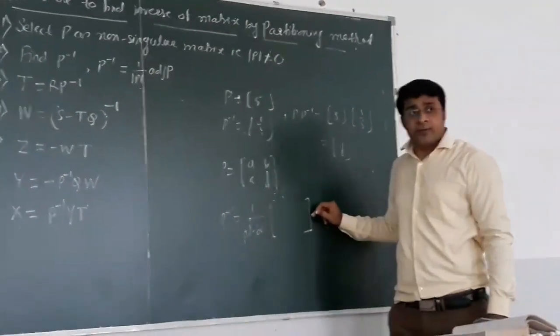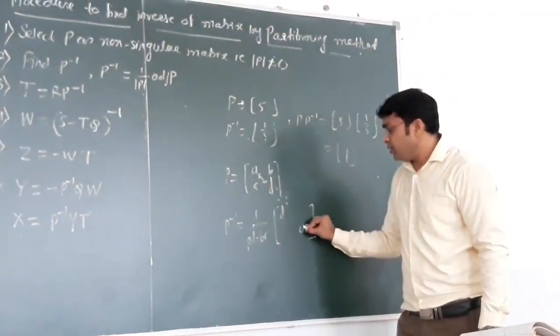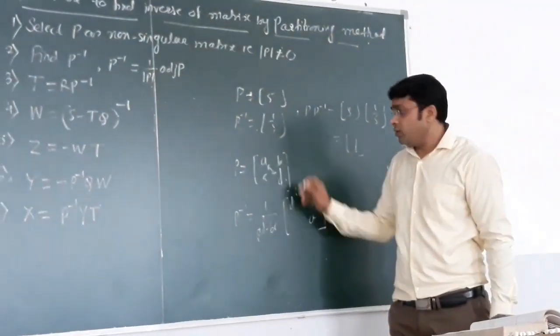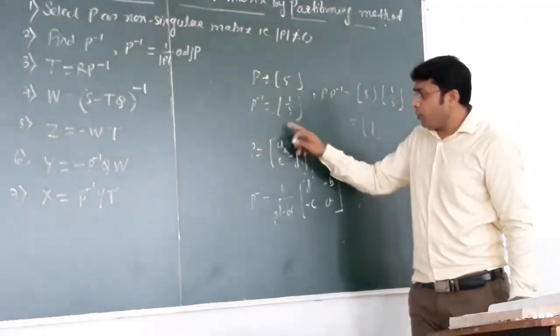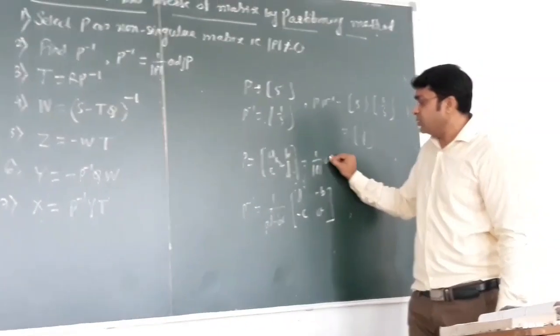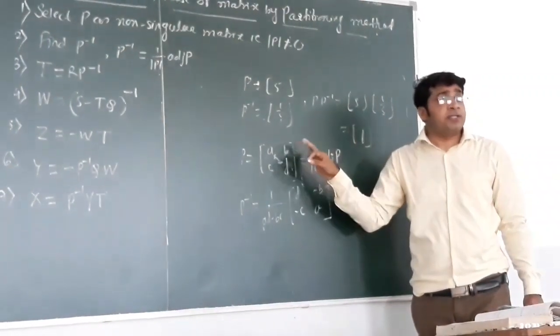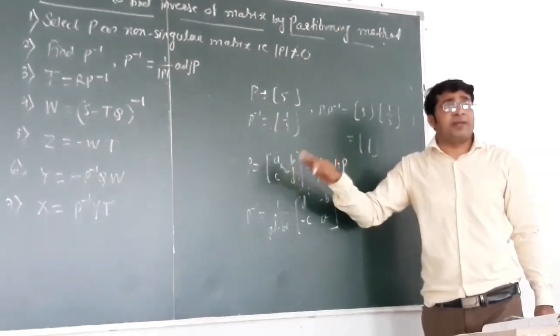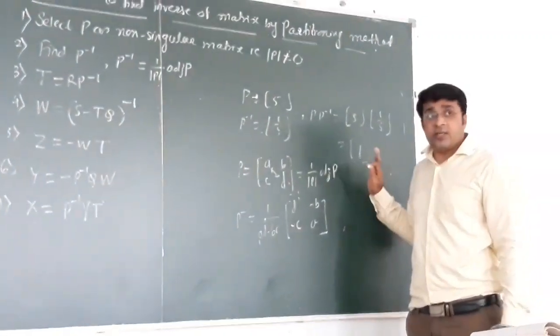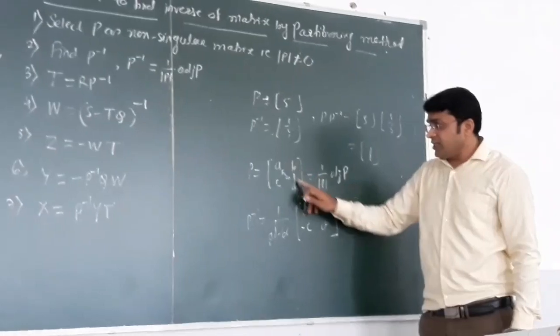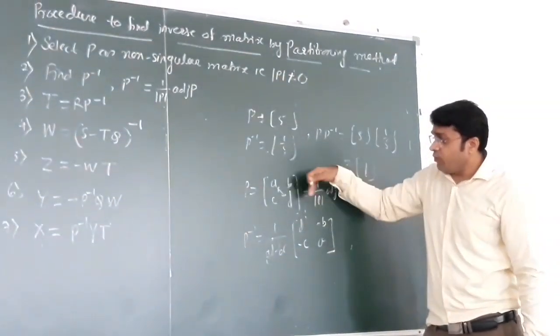Then we will directly write down the adjoint. How we write the adjoint here? I just interchange these two diagonal elements, it is D and A. Then changing the sign of non-diagonal, that is minus B and minus C. We can get directly the adjoint of P for 2 by 2 matrix. But for 3 by 3 matrix, we have to find the cofactor matrix and take the transpose of that.